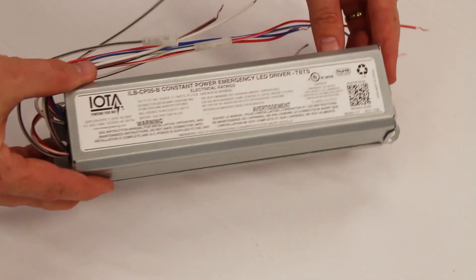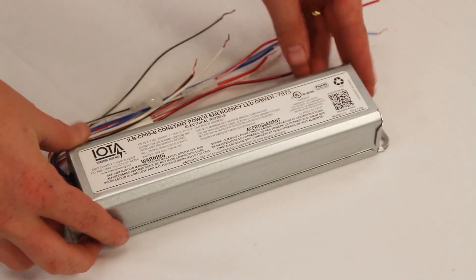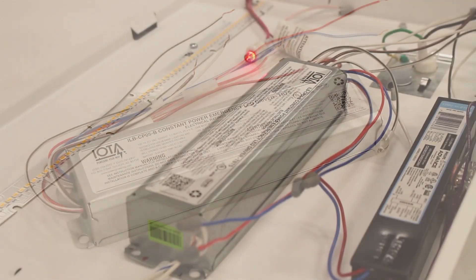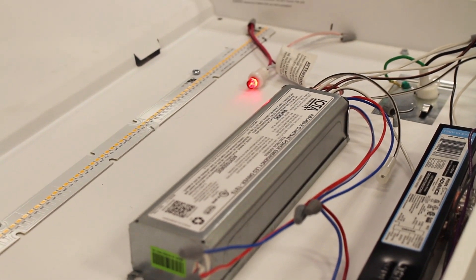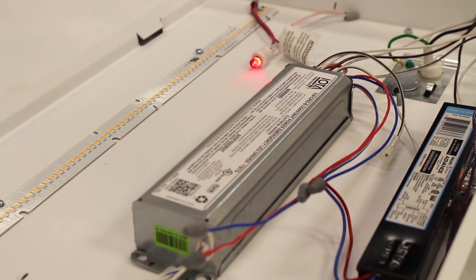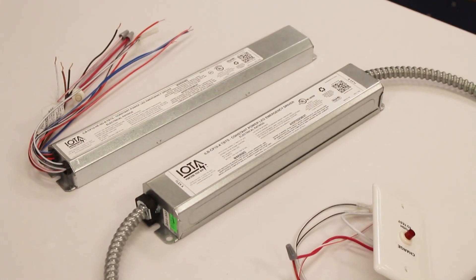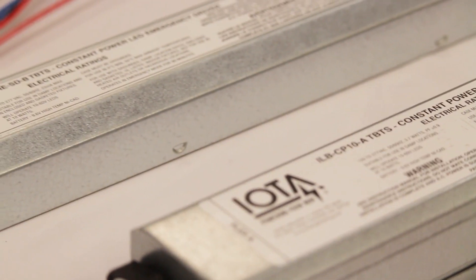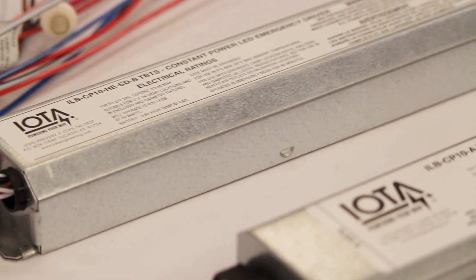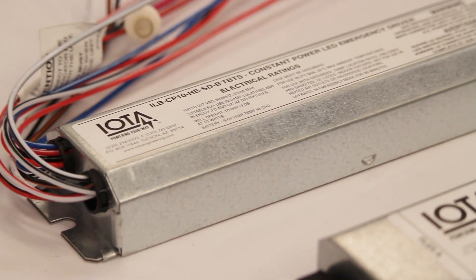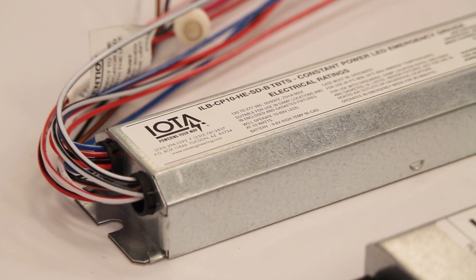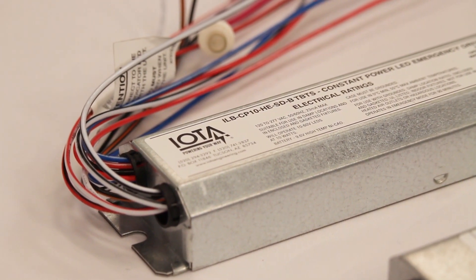This particular video will focus on the B integral mounting configuration, however the wiring and testing of each unit will be the same regardless of mounting style. Additionally, this video will address the wiring of ILB-CP standard units and ILB-CP-SD self-diagnostic units, which have slightly different wiring.